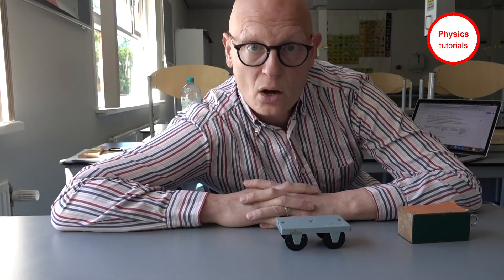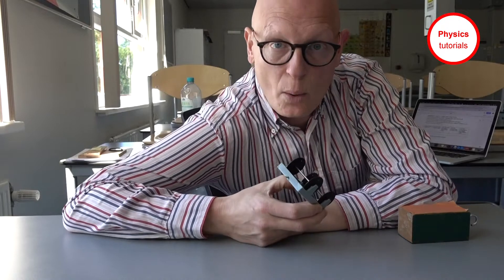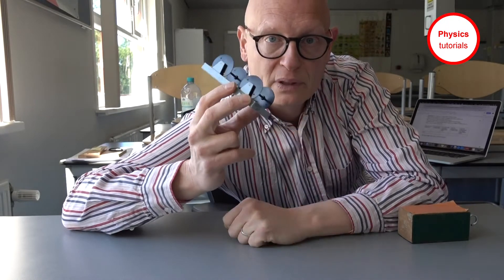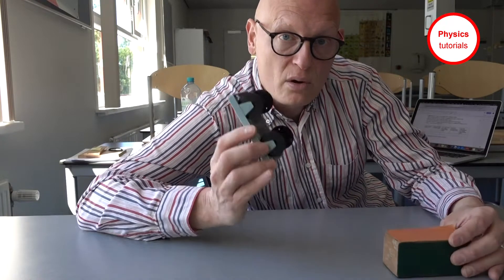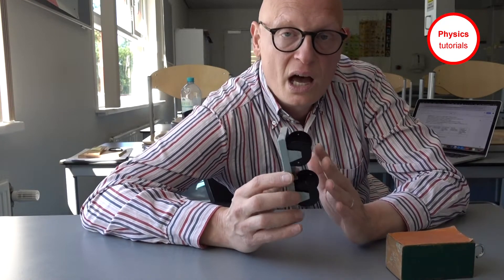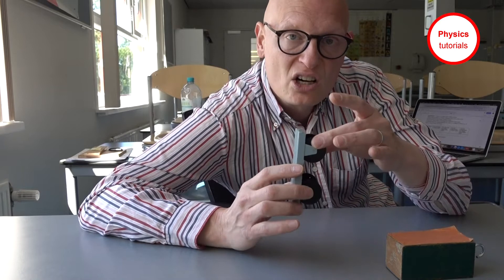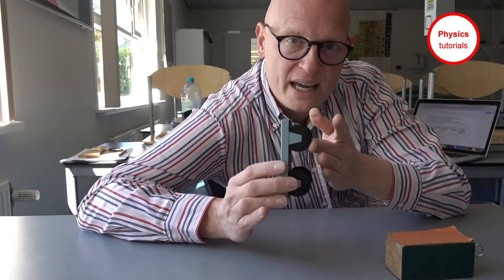Now we're going to look at friction on a rolling object, so basically that's an object with wheels. A big difference between sliding friction and rolling friction is of course that these wheels are not fixed, so they move along with the movement.